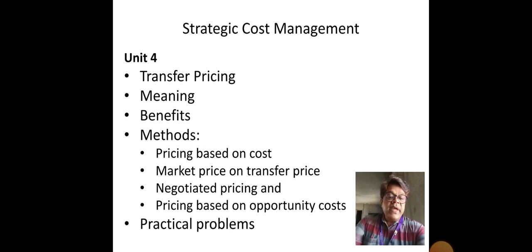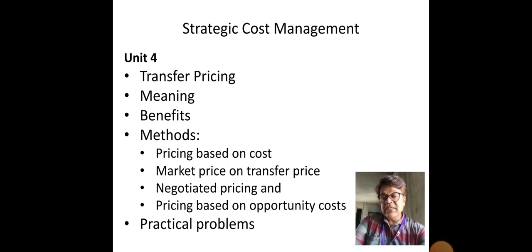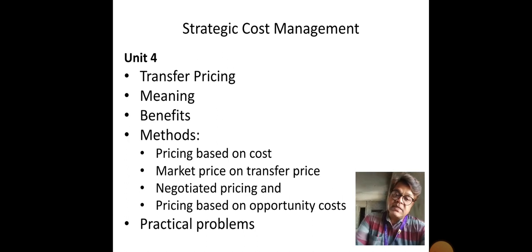Third, negotiated pricing: the bargaining power enjoyed by either party — plant A or plant B — determines the transfer price. Fourth, pricing based on opportunity cost: the value of benefits sacrificed by an organization is the opportunity cost, and that is taken into account while fixing the transfer price.